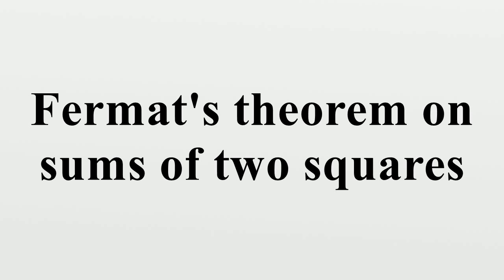For this reason this theorem is sometimes called Fermat's Christmas theorem. Since the Brahma-Gupta-Fibonacci identity implies that the product of two integers each of which can be written as the sum of two squares is itself expressible as the sum of two squares,